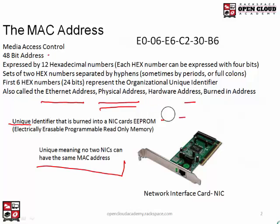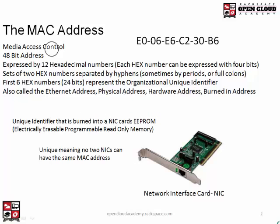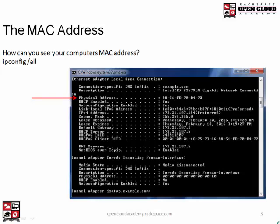It's important to know these details for the test because they'll ask you how long the MAC address is and things like that. If you go into your command prompt and type ipconfig /all — make sure you put a space and then 'all' — this will display on the screen. Right here it says 'physical address,' and there is your MAC address, again separated by those hyphens. If you count them, it's 12 — that is an official true MAC address.